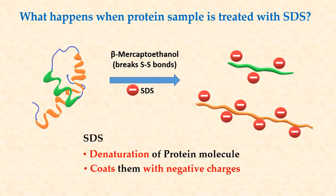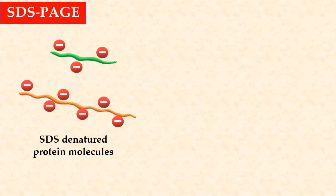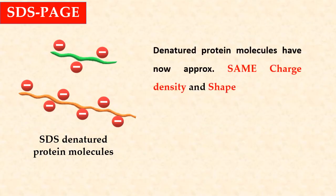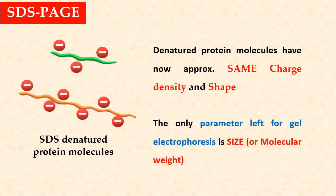Thus, as a result of this pre-treatment of proteins with SDS and the reducing agent, all the proteins in the sample acquire a rod-like shape. Another important point is that, besides shape, the charge-to-mass ratio of all denatured proteins becomes nearly constant. So now, all the proteins in the sample have the same charge density and shape. The only parameter left for gel electrophoresis is the size, or molecular weight.